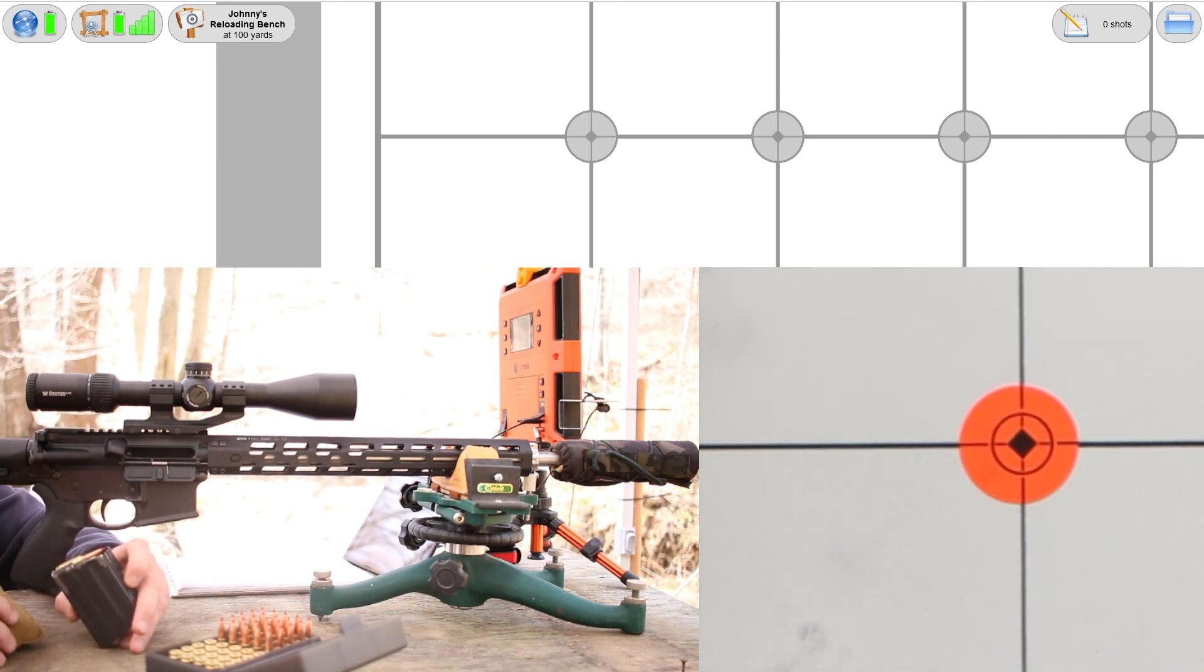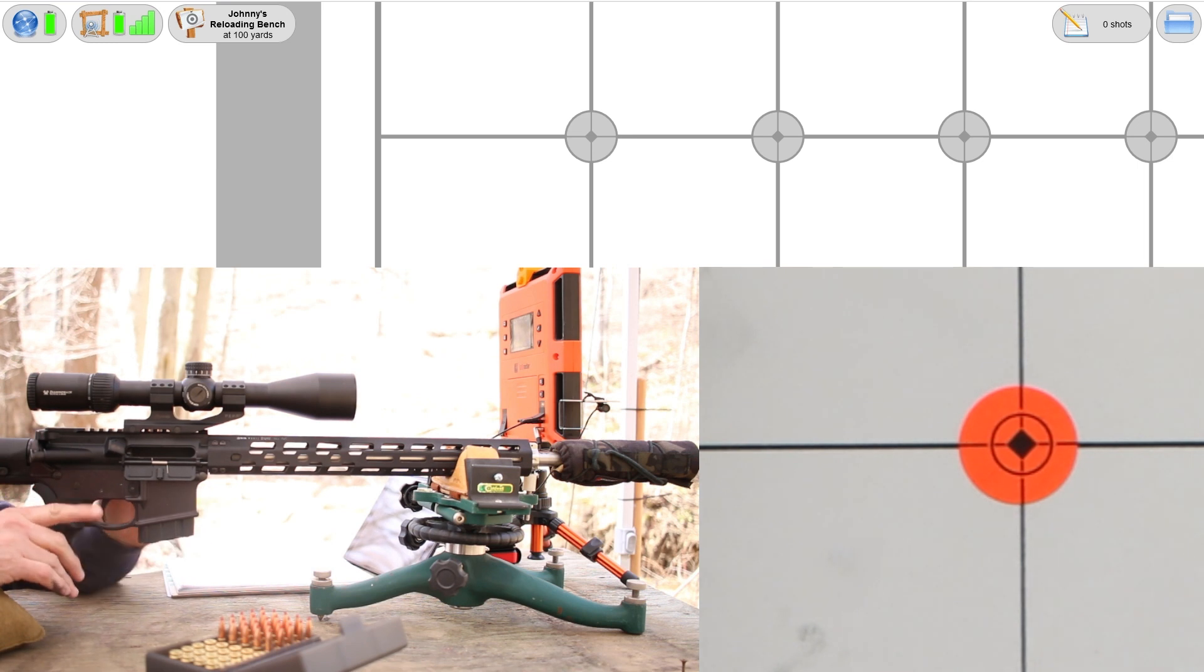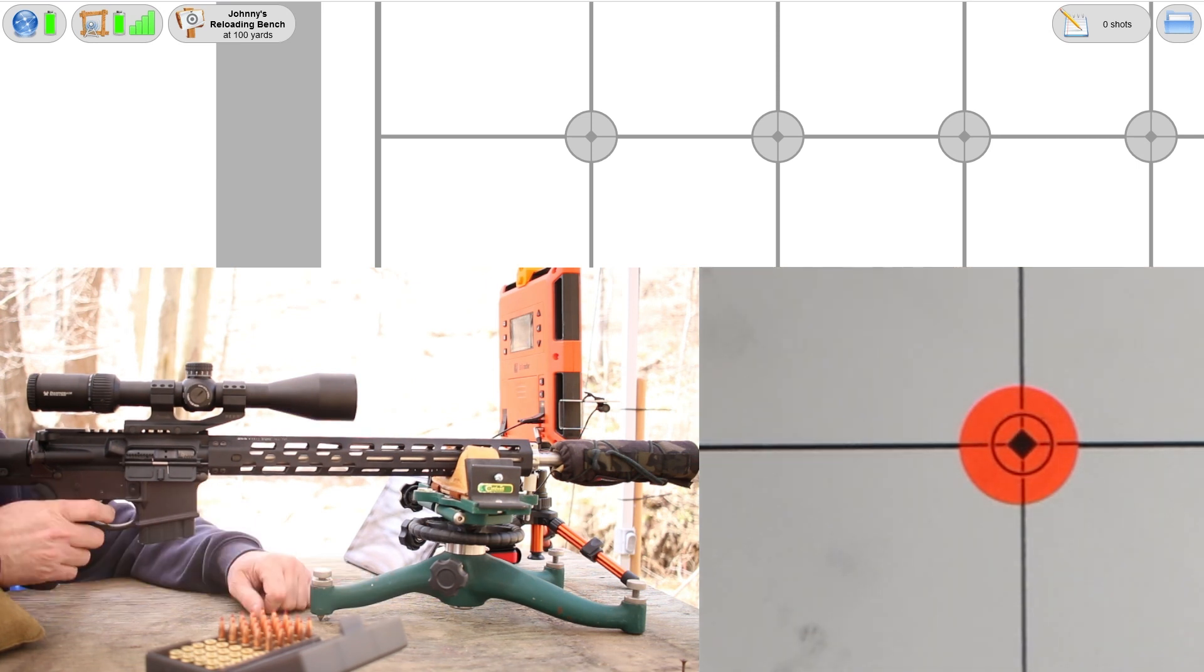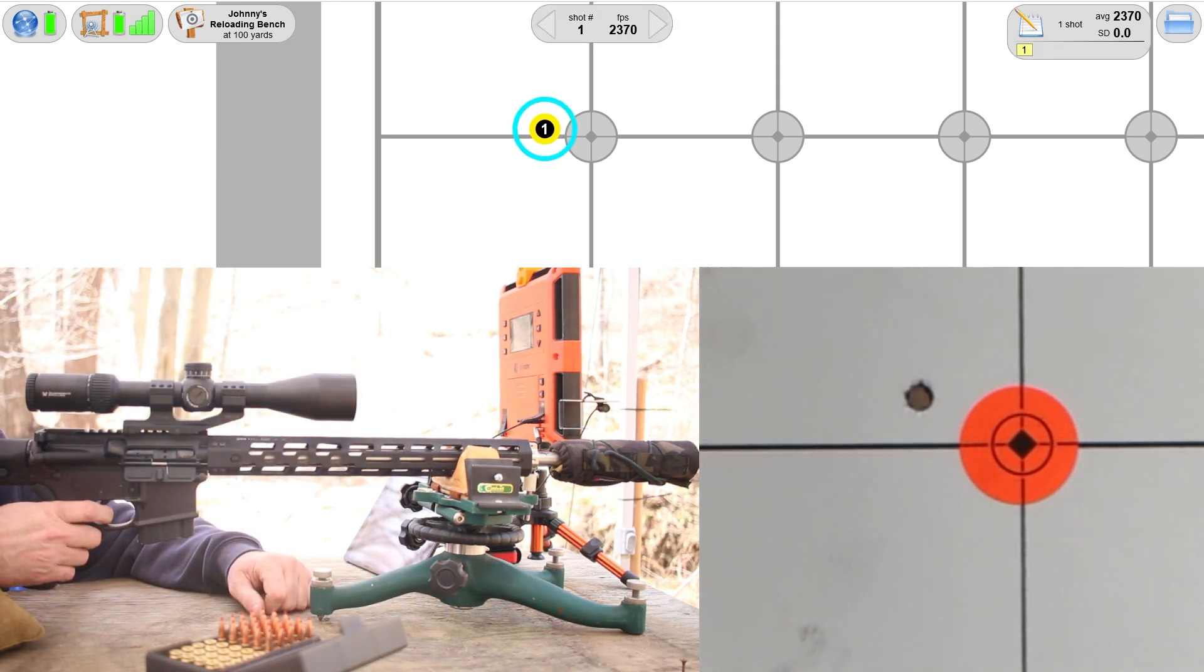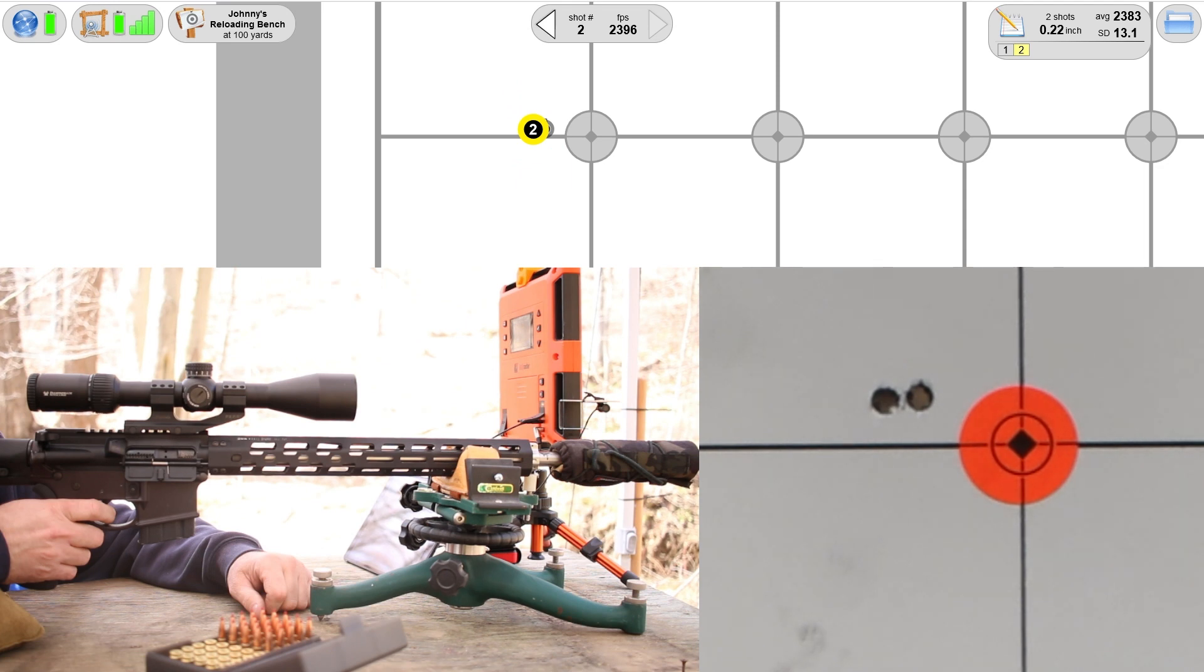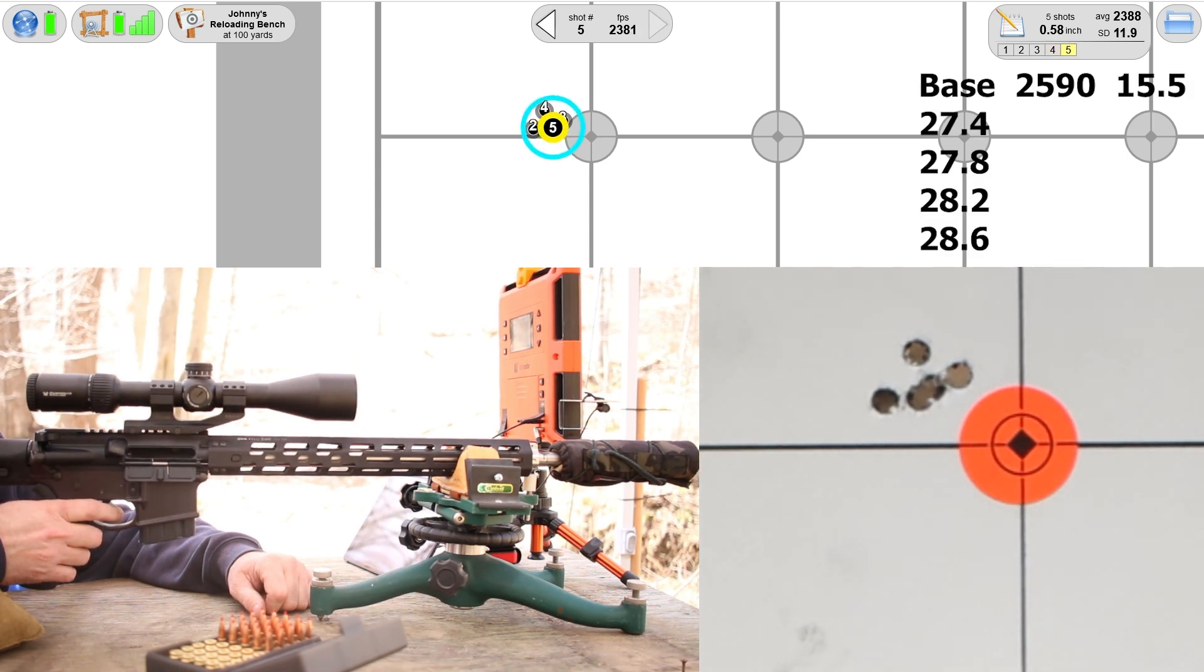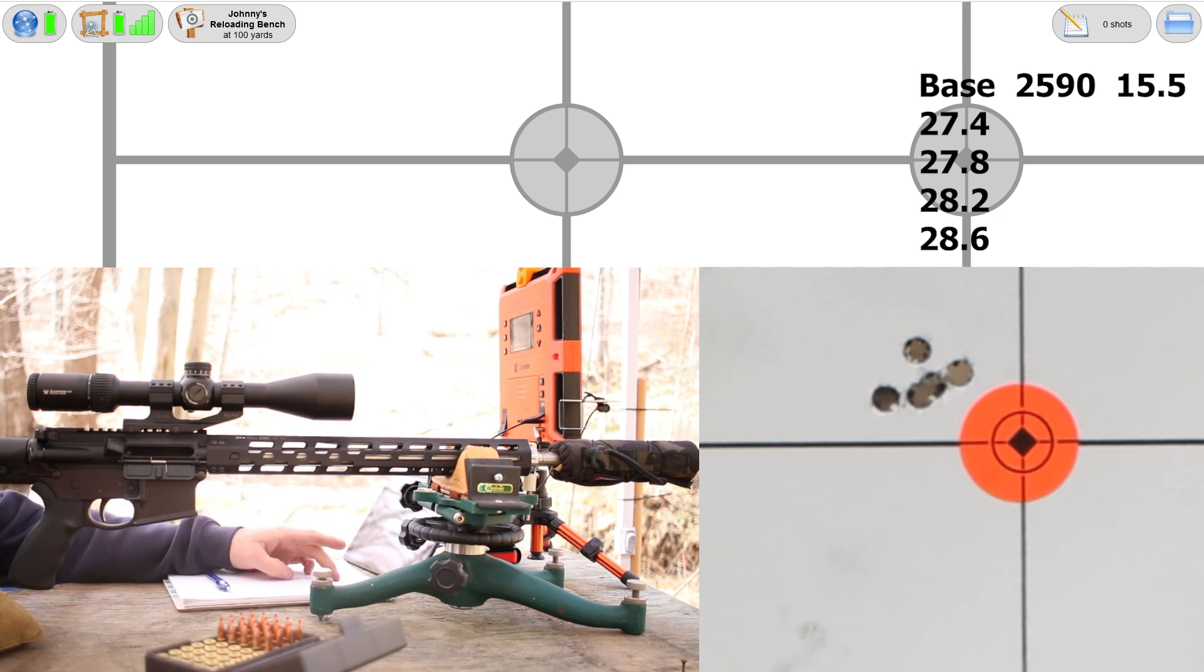First up with 6 ARC is going to be our verification load with 30 grains of PowerPro 2000 MR. The gun's cold and it's currently sighted in for 85 grain bullets, so we'll see where these land. That group was 0.58 inches, velocity 2590, standard deviation 15.5.